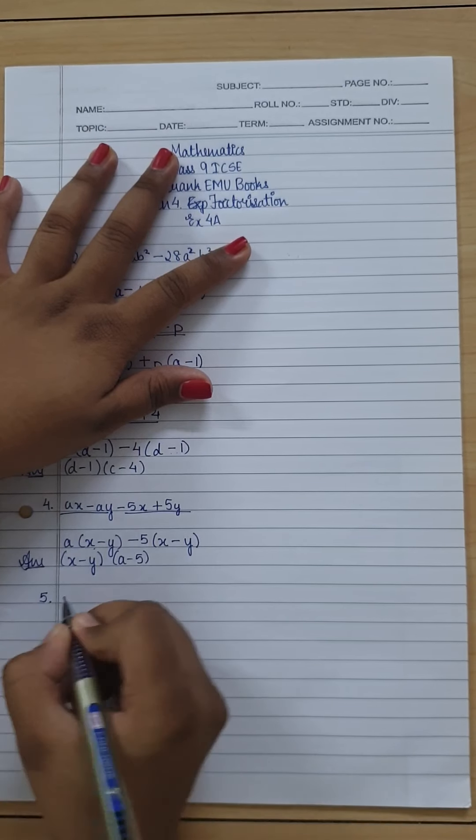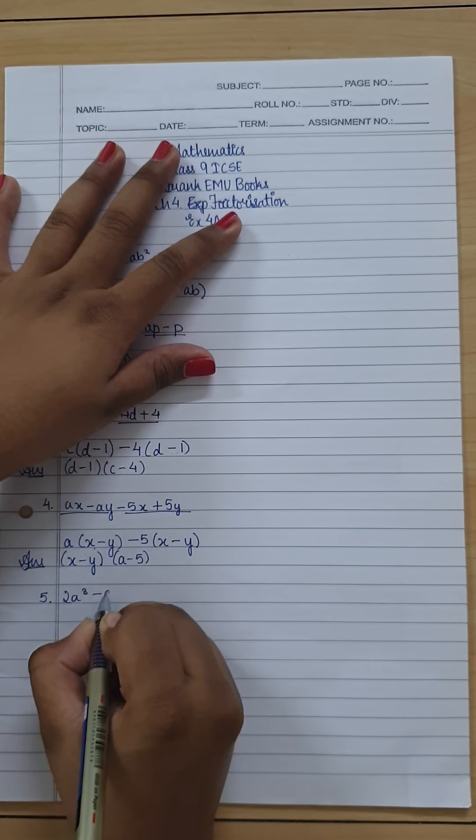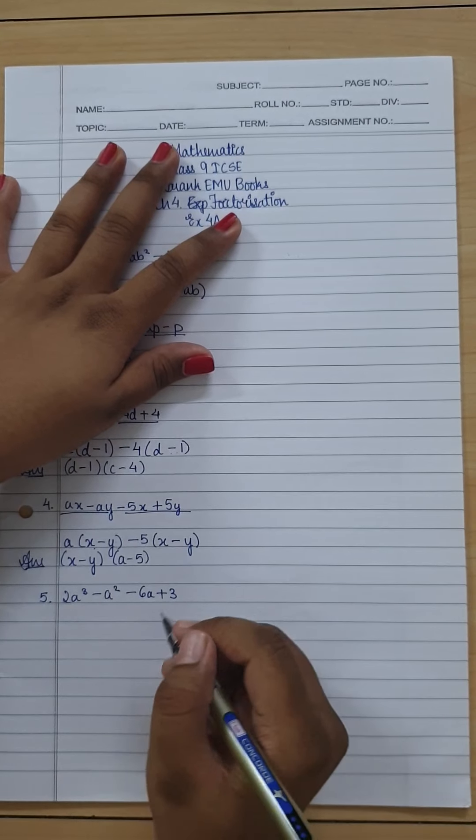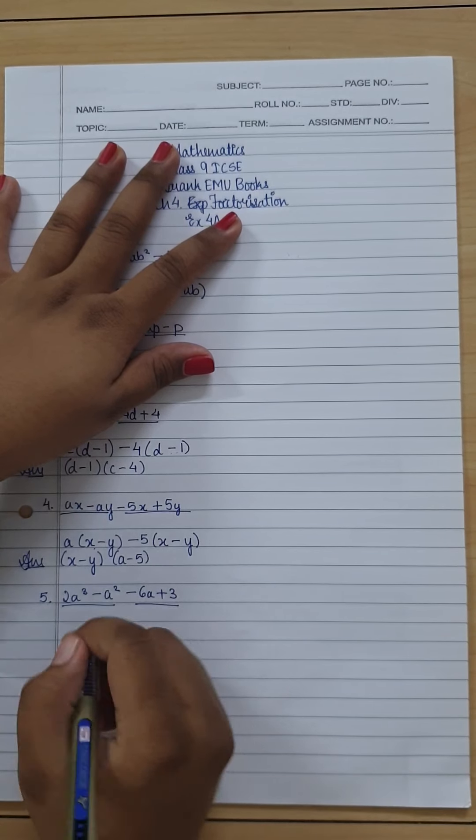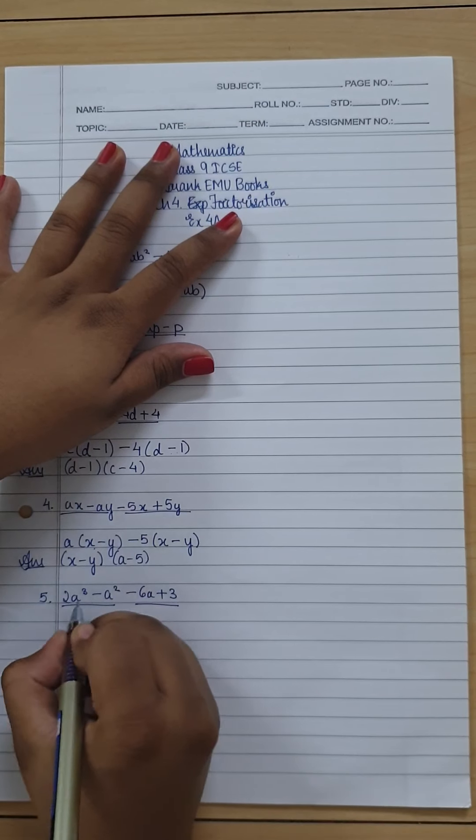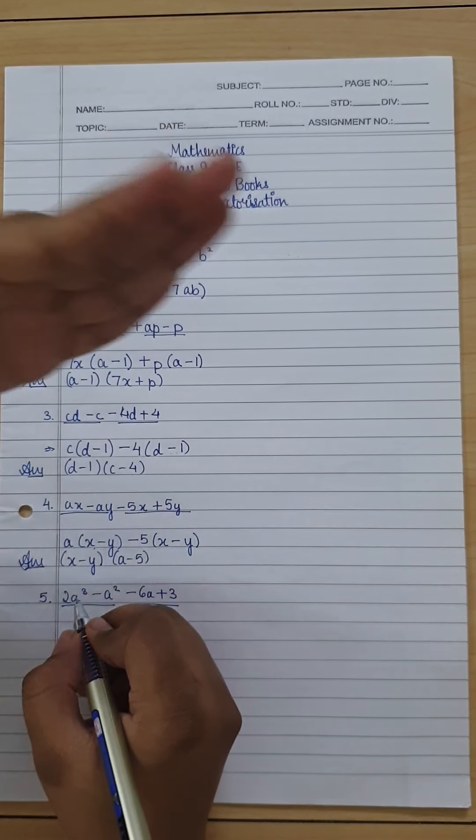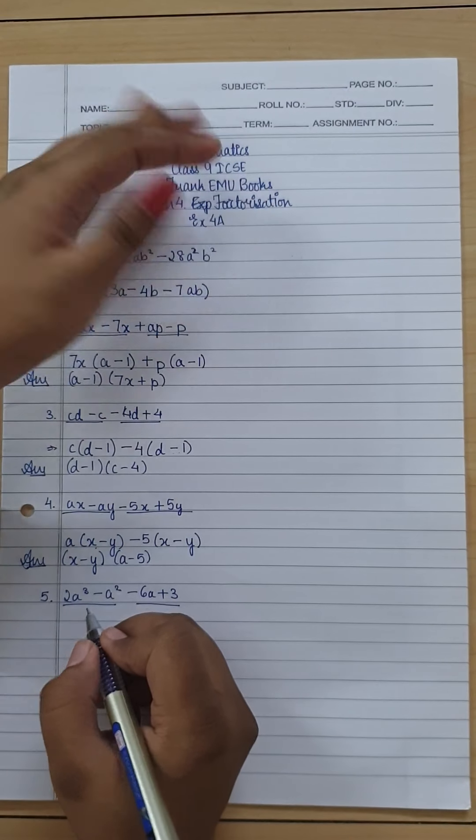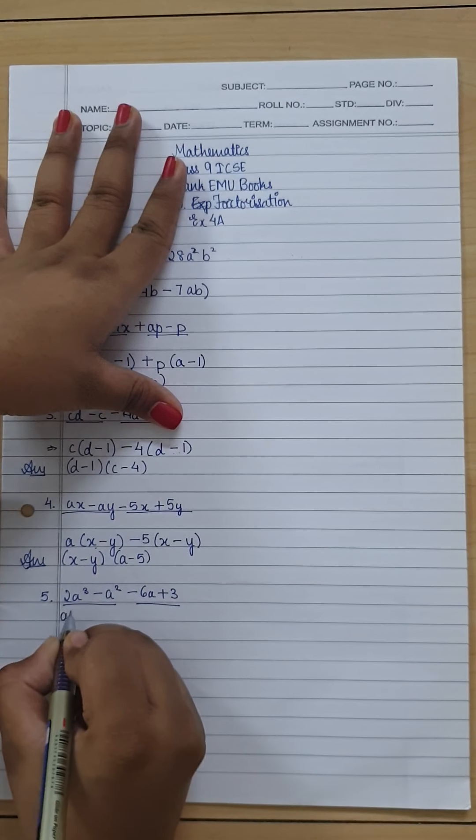Moving on to the last question for this video, that is the fifth question, we have 2a³ - a² - 6a + 3. Now again I'm going to take the first and second and third and fourth terms over here. So it's 2a³ - a². According to me, a² is what's common in both, because even in a³ you have a² × a, that is a^(2+1), that's why it's a³. So if you take a² out as a common number, you get 2a - 1 over here.